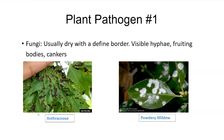Examples include anthracnose — curling, dry lesions — and powdery mildew, with very powdery and fluffy fungal structure growing. It's not too hard for identifying fungi.